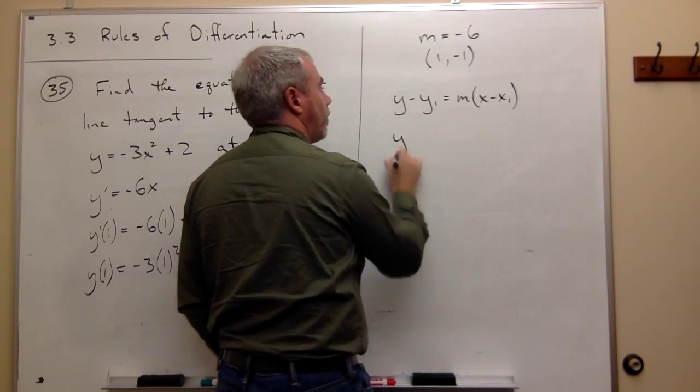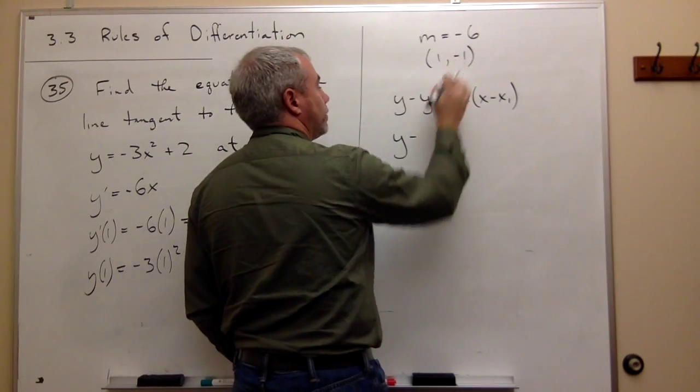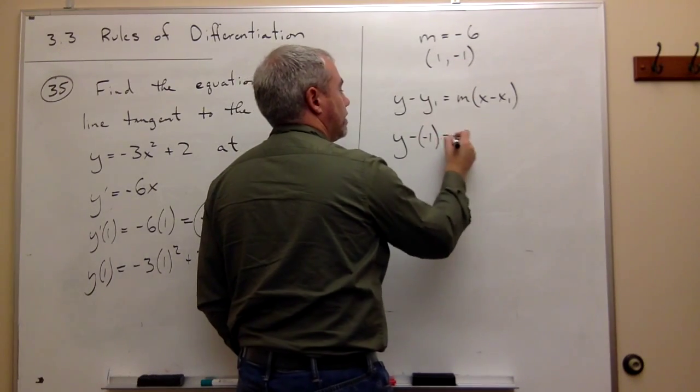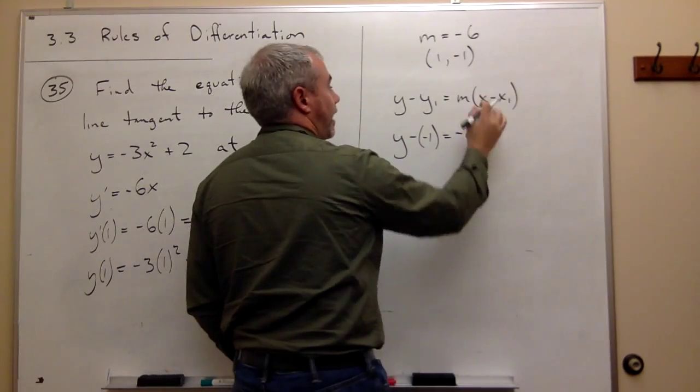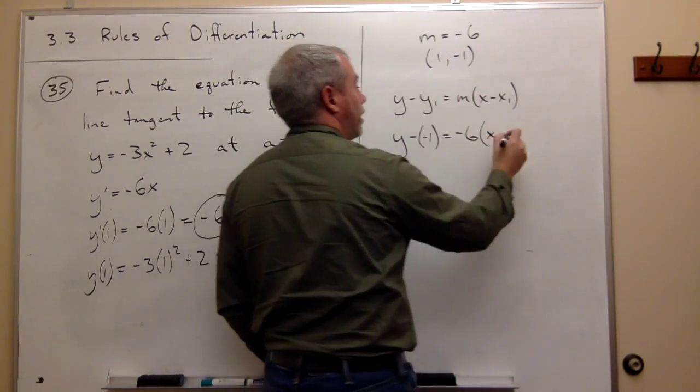Plug things in, and I get y minus y1, which is negative 1, equals m, which is negative 6, times x minus x1, which is 1.